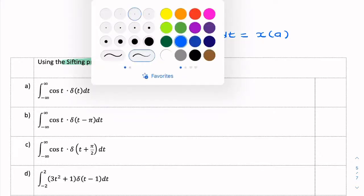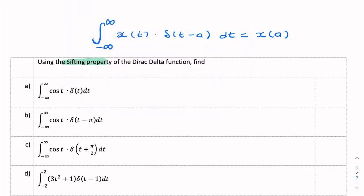x of a, and a comes about by taking the argument of the impulse and equating it to zero, because that's where the impulse will be non-zero. So t equals a, and it's this a that goes into there. This is the property we'll be using, called the sifting property or the sampling property.